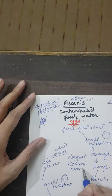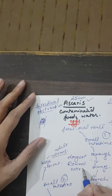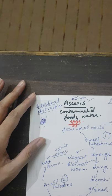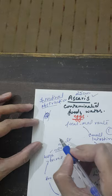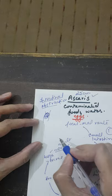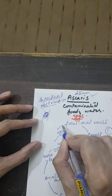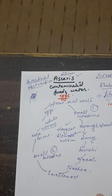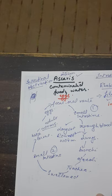Ascaris lumbricoides is also called the longest roundworm. Nematodes are commonly called roundworms, and Ascaris lumbricoides is the longest, reaching up to 25 cm. Too many adult worms accumulating in the intestine can cause intestinal obstruction. In the intestine, they lay eggs which pass out into the environment, contaminating food and water, and a healthy person ingesting that contaminated food or water continues the cycle.